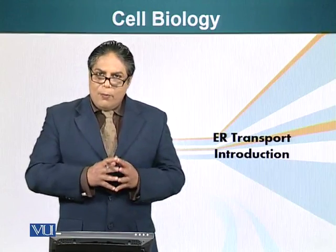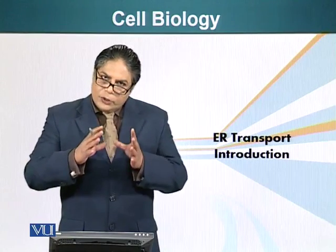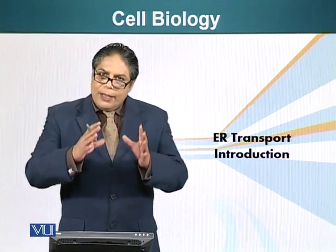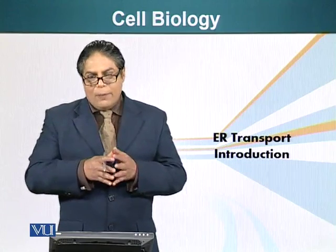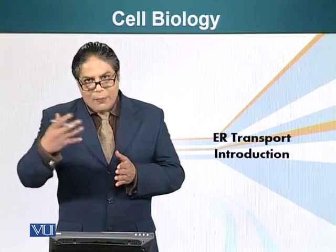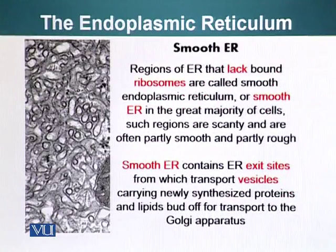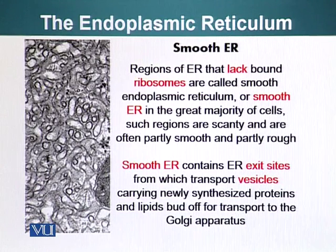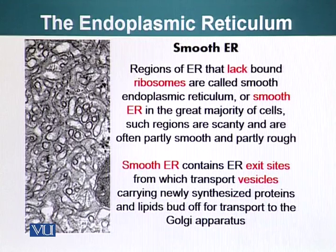Now let's talk about a different type of import. Proteins that are imported into the endoplasmic reticulum are actually injected into the ER while they are being manufactured. First, a few words about the endoplasmic reticulum: regions of ER that lack bound ribosomes are called smooth endoplasmic reticulum, and in the great majority of cells, these regions are not plentiful — they are just specific parts of the overall organelle. Mostly it is rough, and only small portions are smooth.